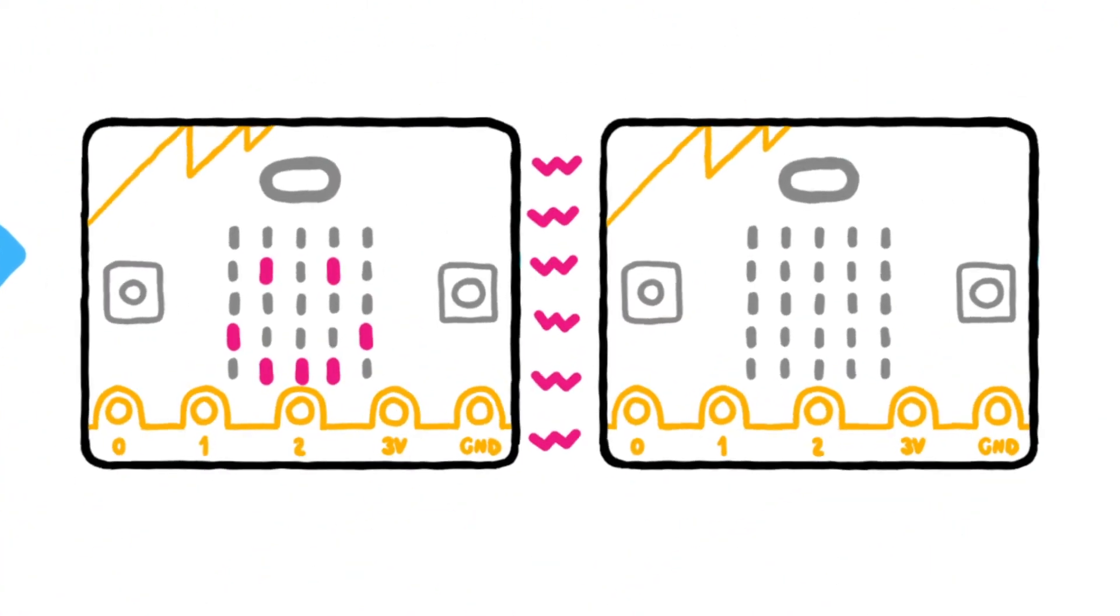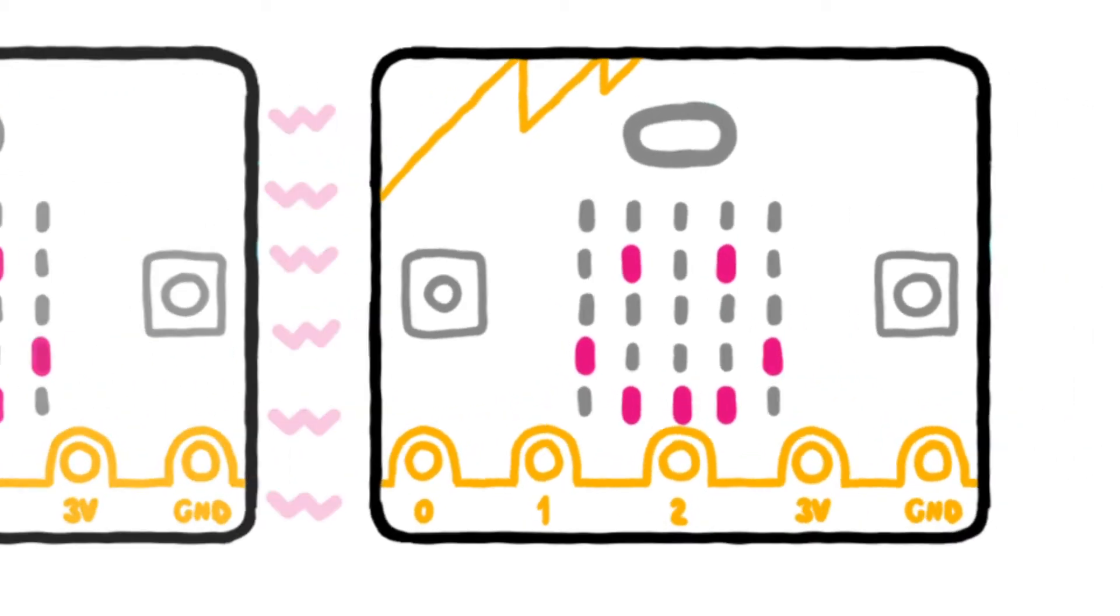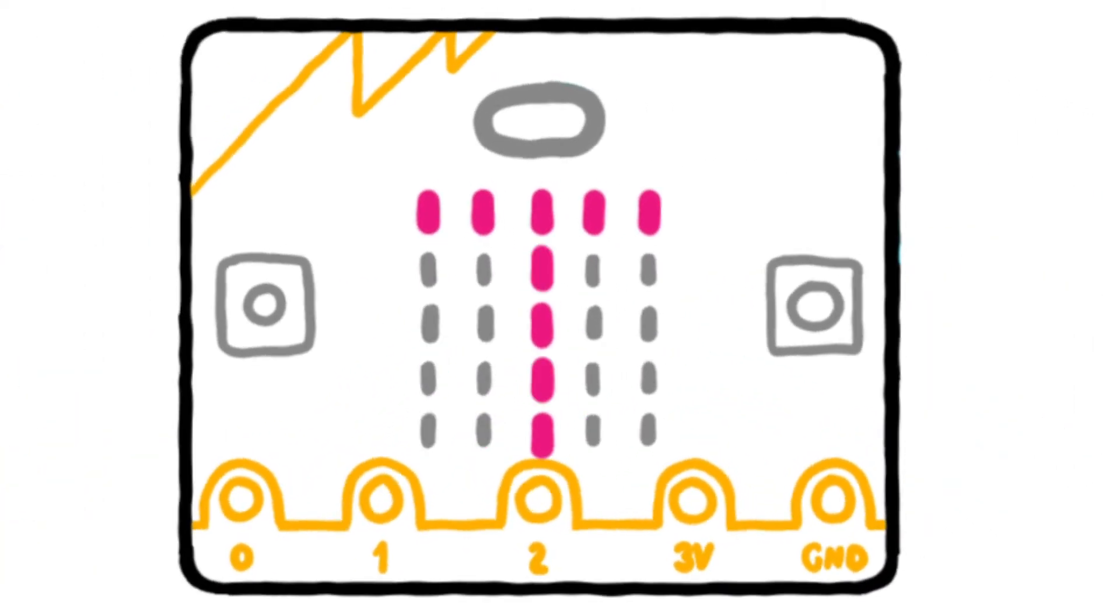If you have two or more micro:bits, you can also use the radio feature, so you can send secret messages between micro:bits and even create fun multiplayer games.